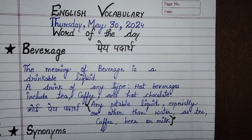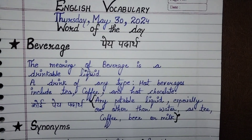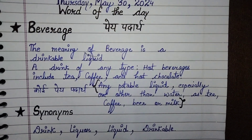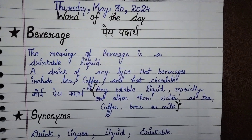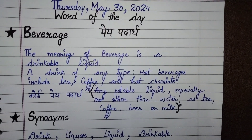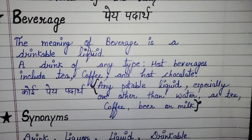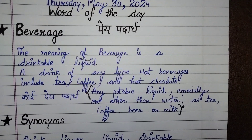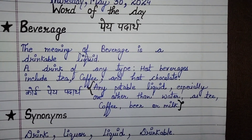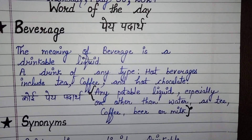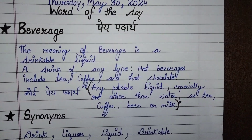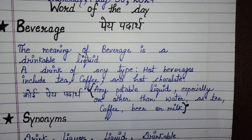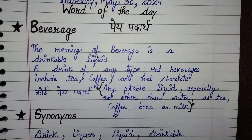Beverage ka meaning hota hai pe-padart. The meaning of beverage is a drinkable liquid — a drink of any type. Hot beverages include tea, coffee and hot chocolate. Any potable liquid, especially one other than water, as tea, coffee, beer or milk. So beverage ka meaning hota hai pe-padart other than water, yani ki paani ke alawa, aur kisi bhi prakara ka koi bhi pe-padart, usse English mein kehte hai beverage.